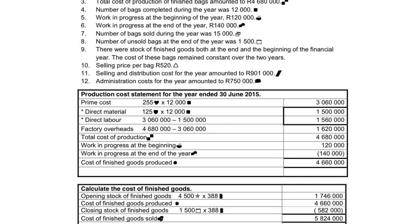Then we have factory overheads — all the other expenses that you pay so that you can produce the article. So the three basic expenses are direct material, direct labor, and overheads. The direct material is the material that is included in the product. For example, in a factory where we make dresses and cut out the pattern, the material included in the dress is your direct material. The material falling off on the sides also costs the manufacturing money and that is called factory overheads.